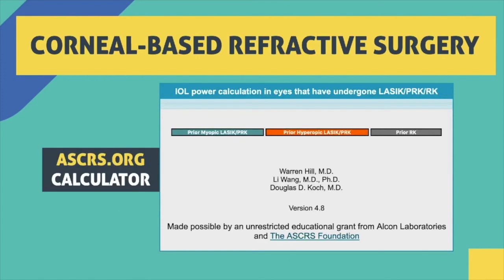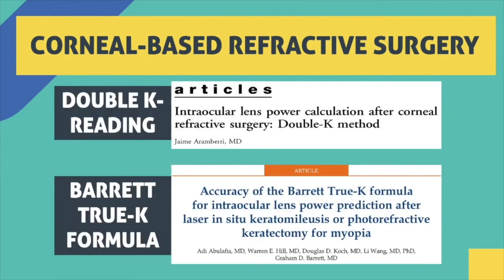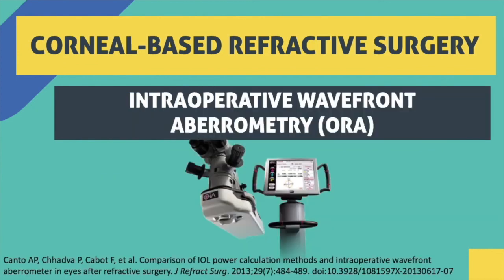The current most popular methods are: first, the ASCRS website, where K readings from tomography or topographic machines — in the form of SimK, total corneal power, or equivalent K readings (EKR) — are entered and the website calculates IOL power with different formulas. Second, the double K method — in 2003, Dr. Aramberri published an article to correct the error in effective lens position using the double K method for SRK/T, Holladay 1, and Hoffer Q formulas but not for Haigis. Third, the Barrett True K formula — recently Dr. Graham Barrett launched his online calculator using True K to calculate IOL power after refractive surgery, also using the double K method, and it is now considered one of the most reliable options after myopic ablation. Intraoperative wavefront aberrometry can also be used with variable accuracy results.